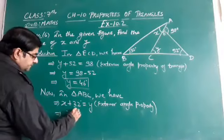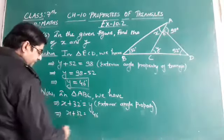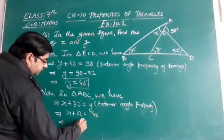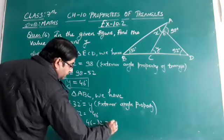So x plus 32 is equal to 46. Therefore, x is equal to 46 minus 32. x is equal to 14 degrees.